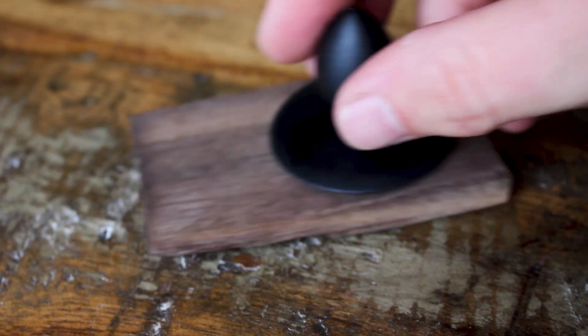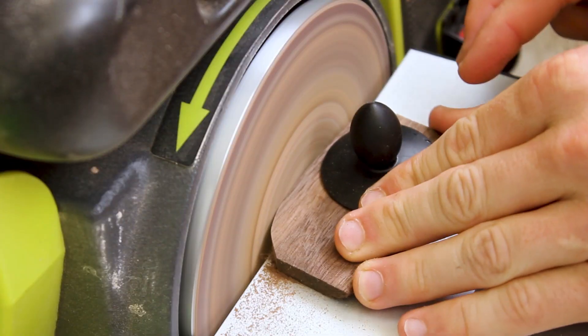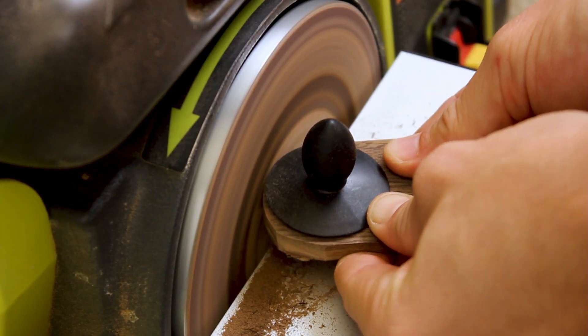I then took my original lid and attached it to one of the scrap pieces of walnut wood that I had cut off earlier, and then just crept up on the overall shape of the circle on the disc sander.